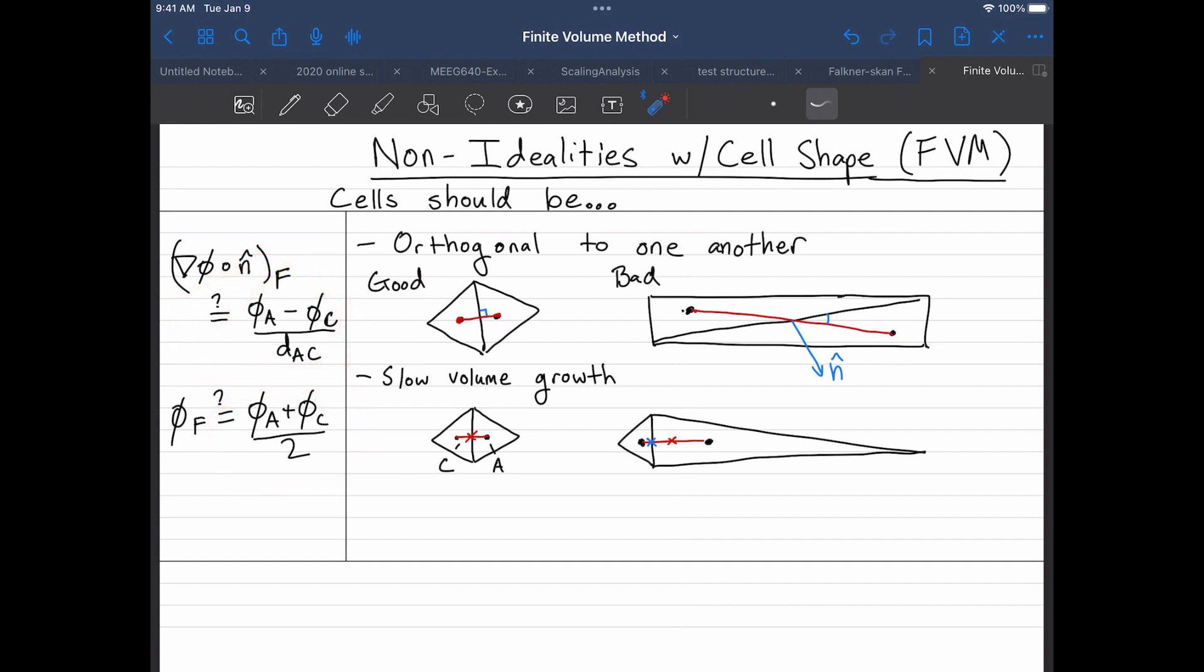So slow volume growth is important. Typically you'll see a setting in SimScale, for example, that when you're generating the mesh, you can limit it so that this cell is only allowed to have edge lengths 20% larger than any adjacent cell, for example. That's usually a setting in the mesh generator. And then the other thing, which is kind of related but not exactly the same as the other two, is that you'd like the elements to be non-skew.